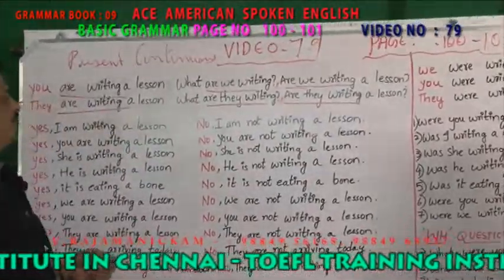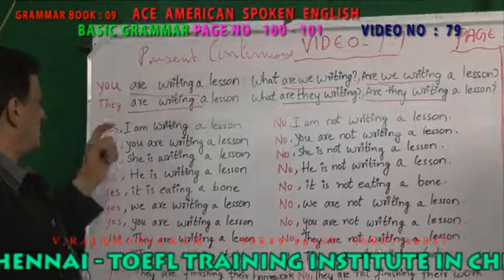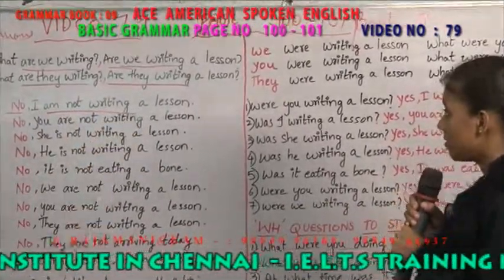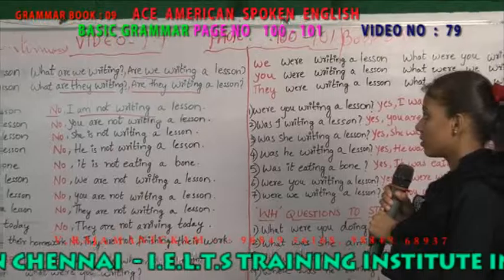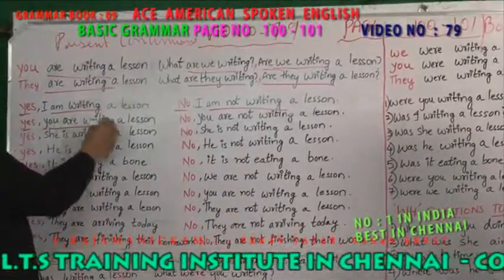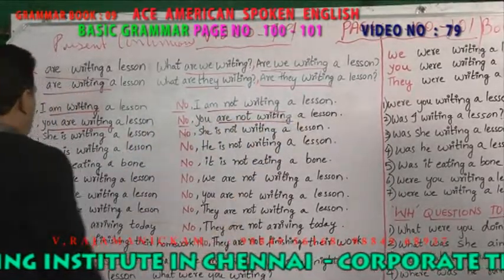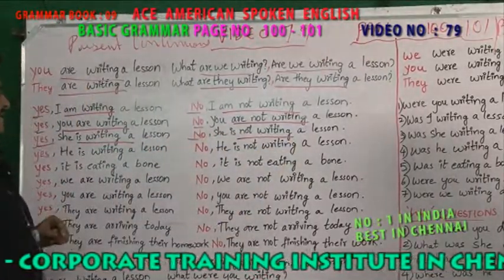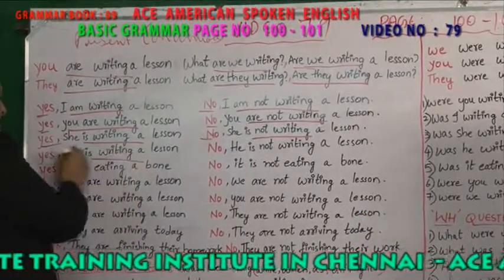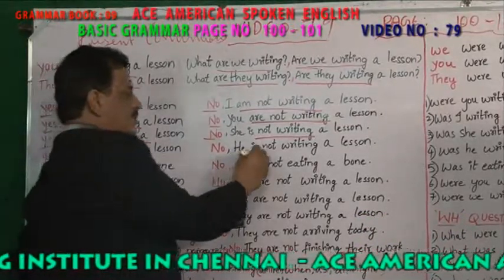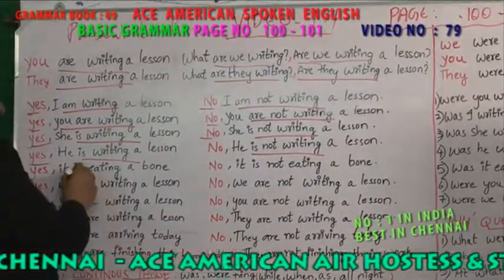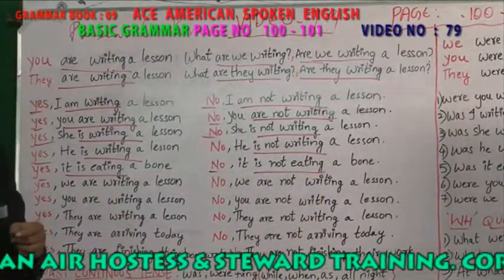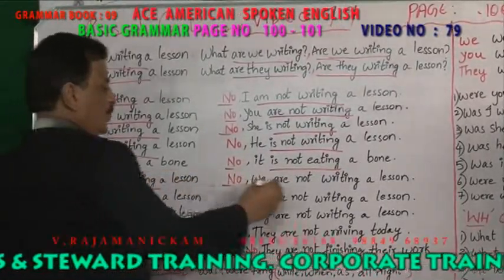For yes/no questions: Are they writing a lesson? Yes, I am writing a lesson. No, I am not writing a lesson. Yes, you are writing a lesson. No, you are not writing a lesson. Yes, she is writing a lesson. No, she is not writing a lesson. Yes, he is writing a lesson. No, he isn't writing a lesson. Yes, it is eating a bone. No, it is not eating a bone.